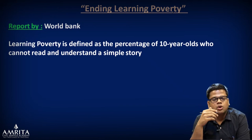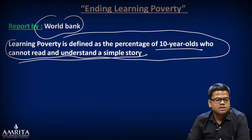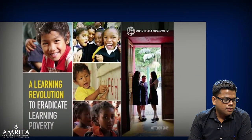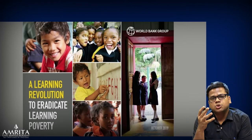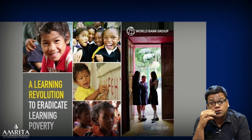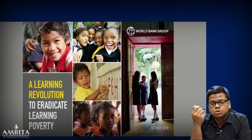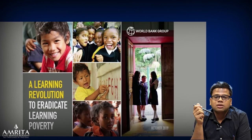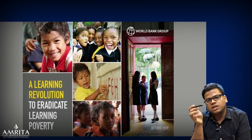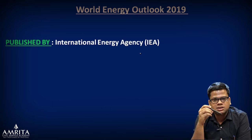The World Bank's report 'Ending Learning Poverty' defines learning poverty as the percentage of 10-year-olds who cannot read and understand a simple story. The ASER report has its own observations on this. This is a very good report — serious aspirants should download it. It gives good recommendations on how to remove learning poverty. The report is not just about putting students in school — it's about getting them to actually learn, which is the end goal, while enrollment is only the means.